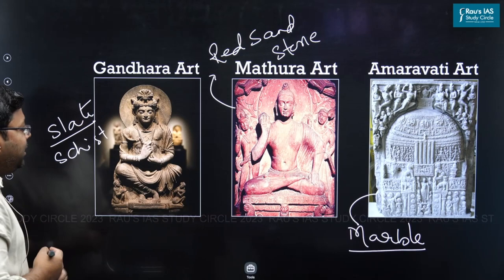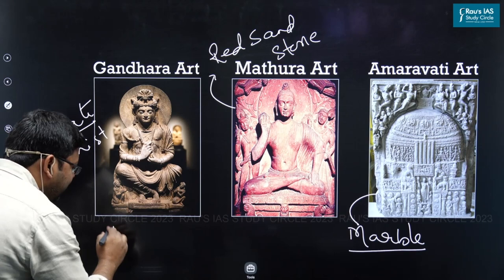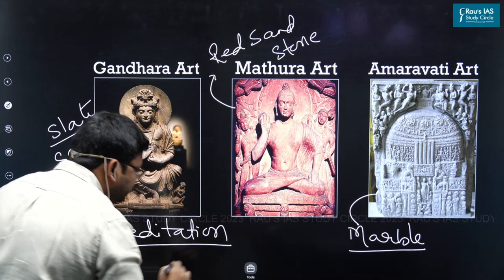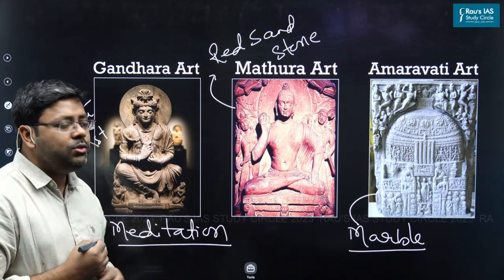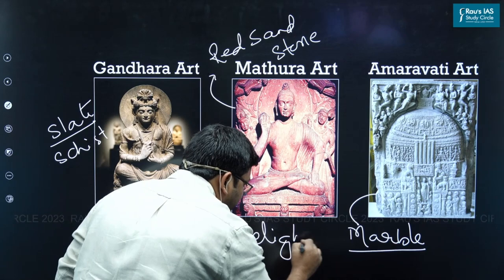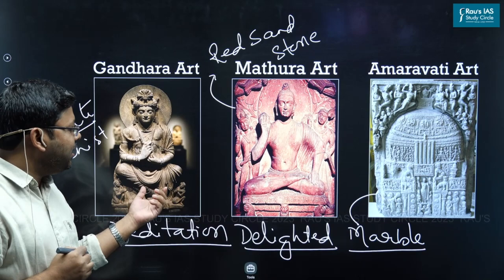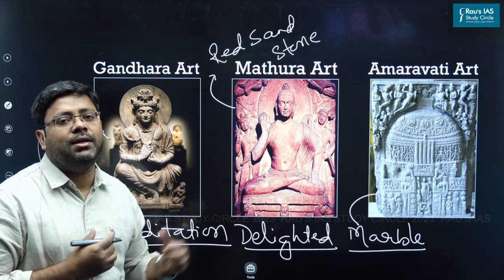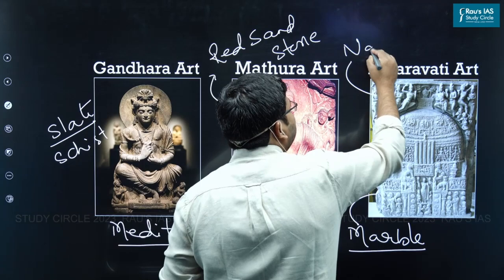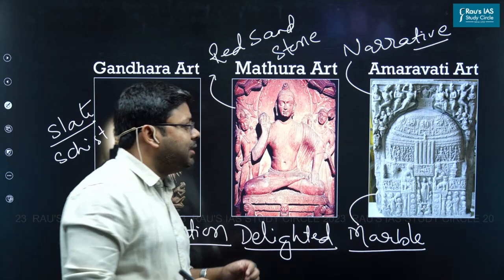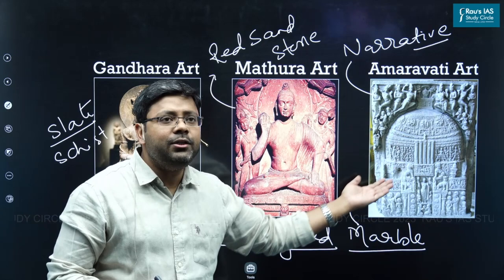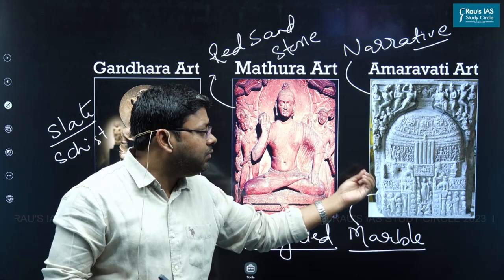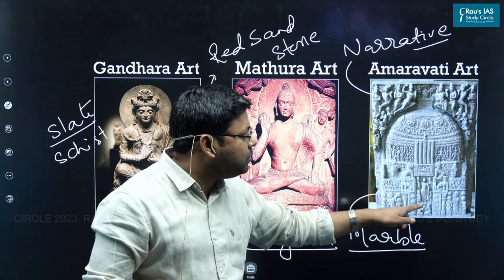In the Gandhara art form, Buddha is shown in a meditative, very spiritual way. Compare that with Mathura art, where Buddha is looking delighted — a major difference between the two forms. In the Amaravati art form, it is basically a narrative art, where the stone or marble panels are used to represent an entire story or episode from the life of Buddha. When you see these marble panels, the story connected with the life of Buddha is represented. So, Amaravati art is narrative art.